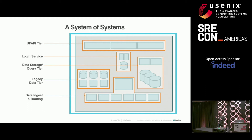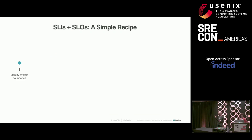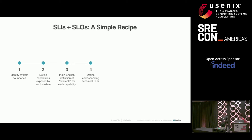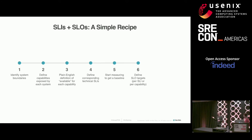Having defined the terms, the basic recipe we're going to follow here is pretty simple. First, we're going to identify the system boundaries that exist in the platform. We're going to articulate the set of capabilities that exist at each system boundary, and a plain English definition of what it means for each capability to be available. Then we're going to define SLIs corresponding to each definition of availability. We're going to start to measure them and get a baseline. Once you've got a baseline, we're going to apply an SLO. And then we're going to iterate and refine over time.